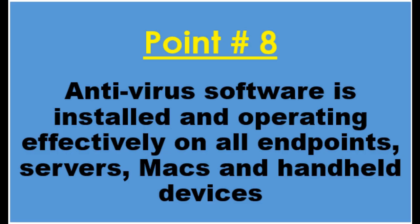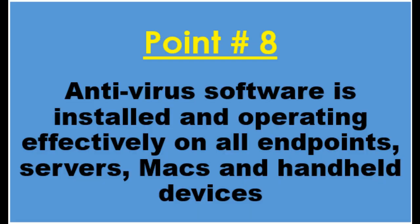Point number seven: make sure that there is a redundant secondary server to the primary antivirus server, and that the primary and distribution servers are backed up regularly and are part of a disaster recovery process.